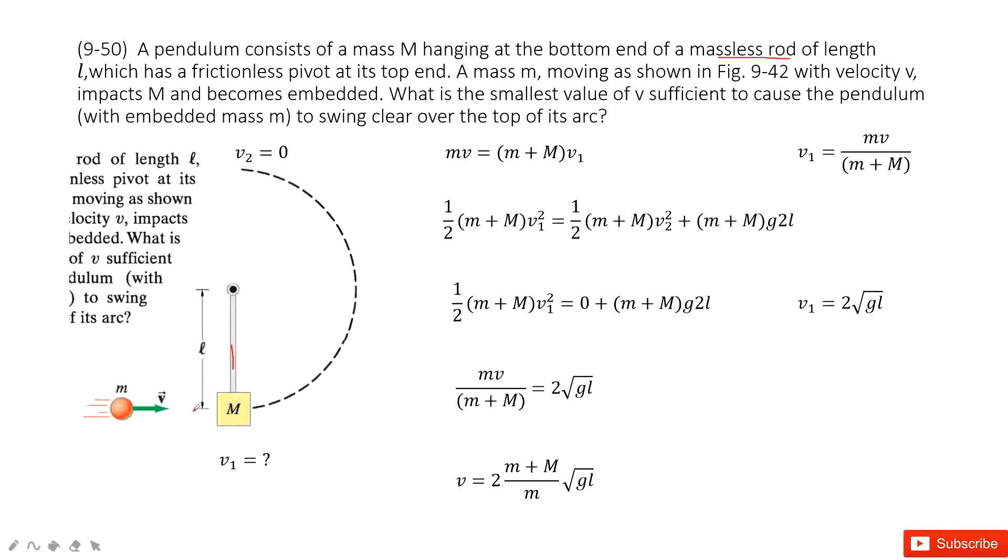And then this box with a bullet moves up until the peak. And then ask you what is the smallest value of this bullet velocity to make this pendulum can move to the top of this peak.